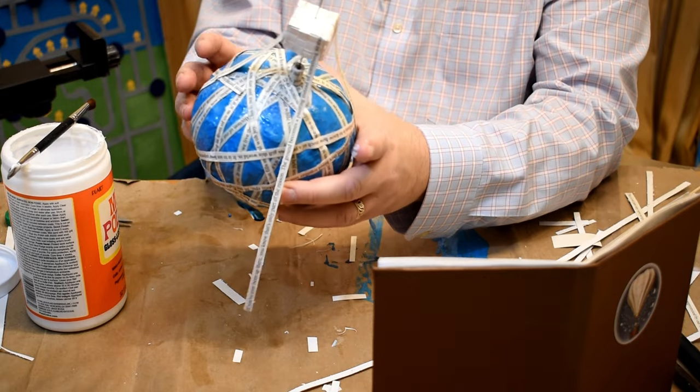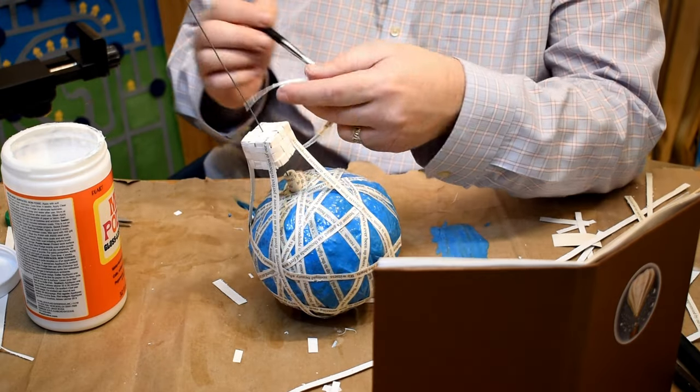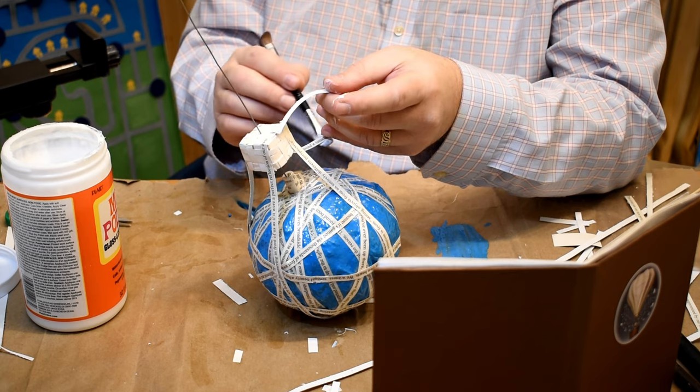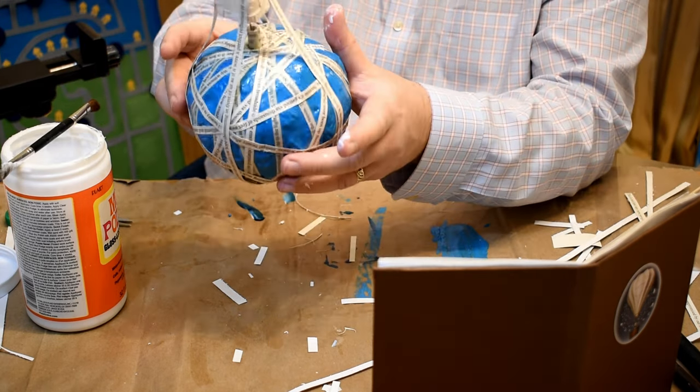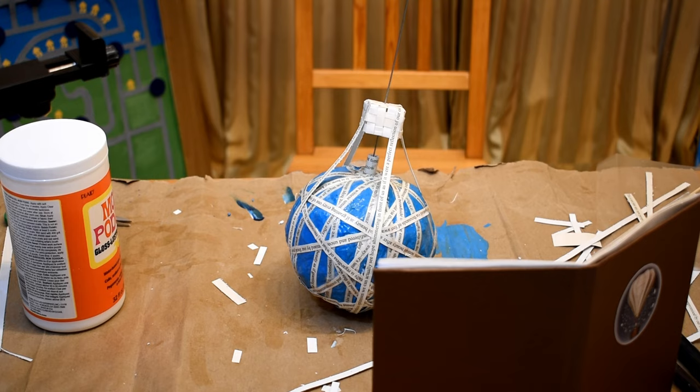And then just smoothing them in place, making sure they have tension, and look like they're naturally coming off of the balloon. And that's actually why I'm gluing from the basket to the balloon and not the other way around, which I learned doesn't really work very well.